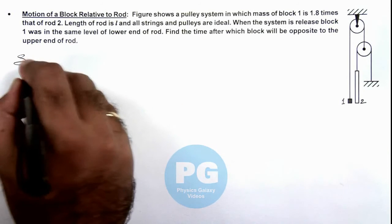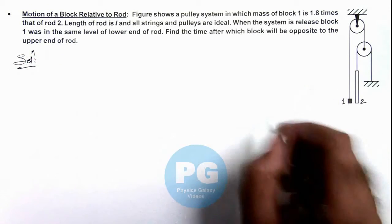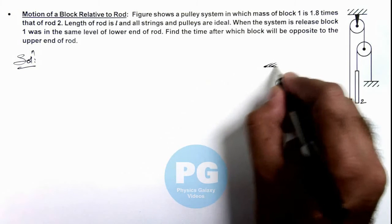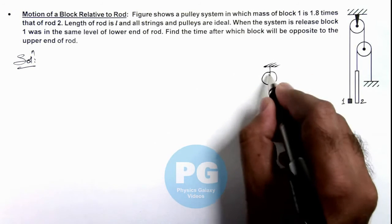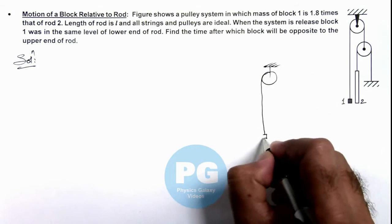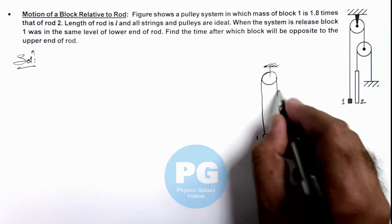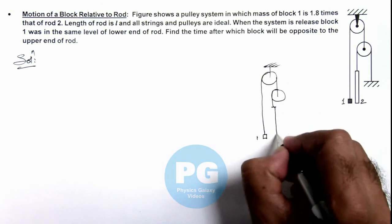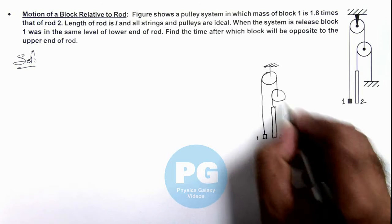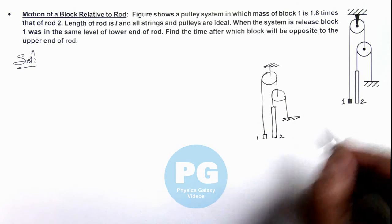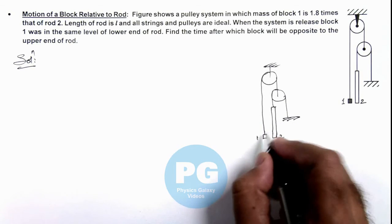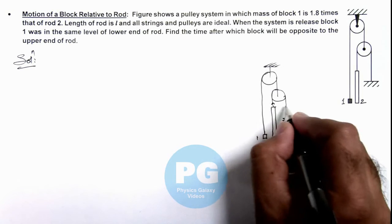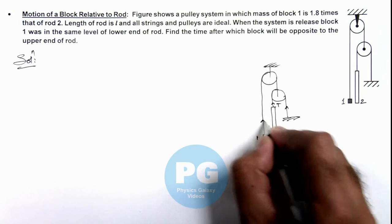So in this situation here, we can draw the situation again with the free body diagram. Here you can see if this is block 1, and this is the rod 2. Here the string is fixed. Obviously here you can see if on this string tension is T, here it will be 2T.